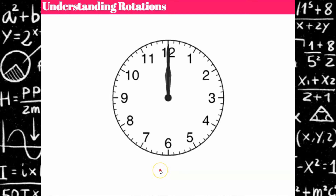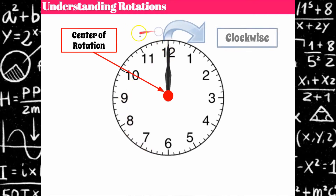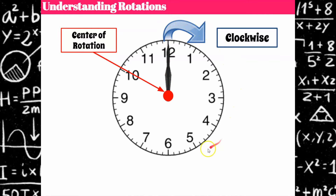Let's go over understanding a rotation. I'm going to start with a clock because that's typically what we refer to as clockwise or counterclockwise. The clock hands rotate about the center of rotation — they're anchored at that center and move around that point. Clockwise is when we go to the right, just like a clock moves — that's where the word comes from. Counterclockwise is going in the opposite direction, almost like going back in time.